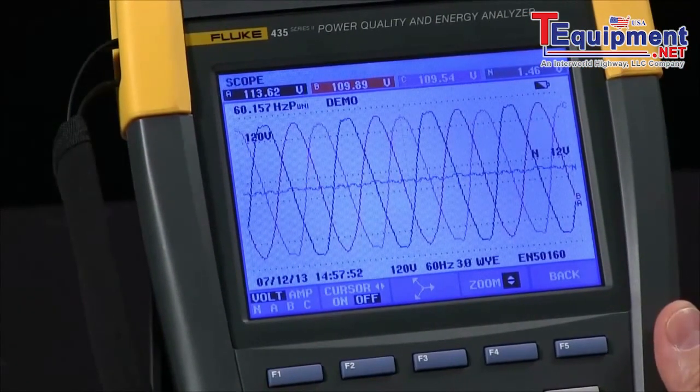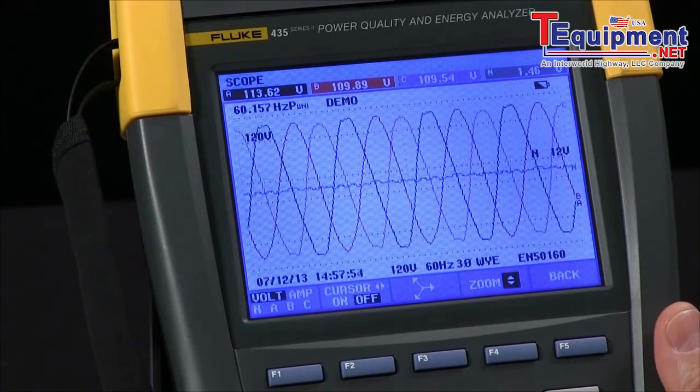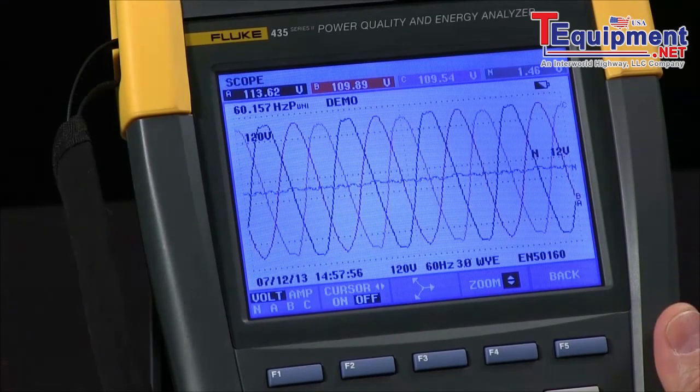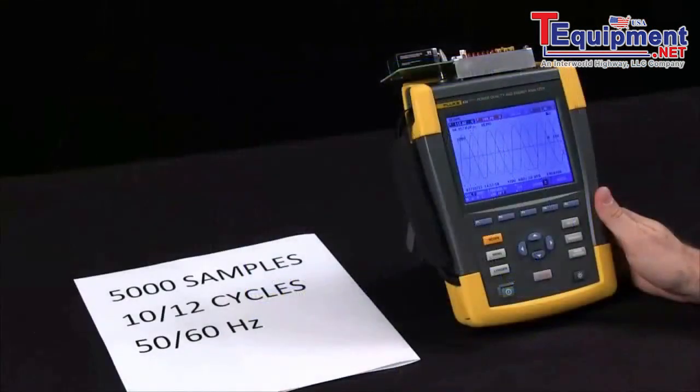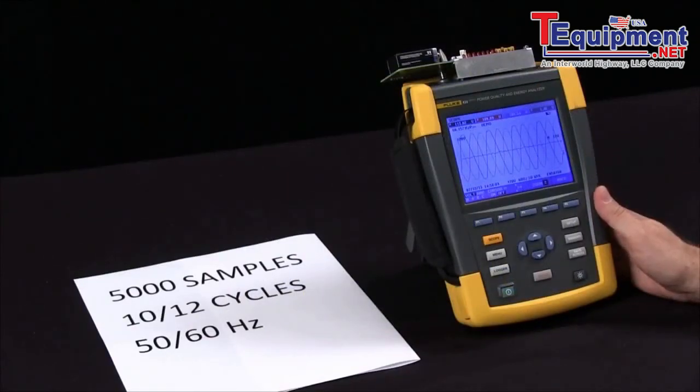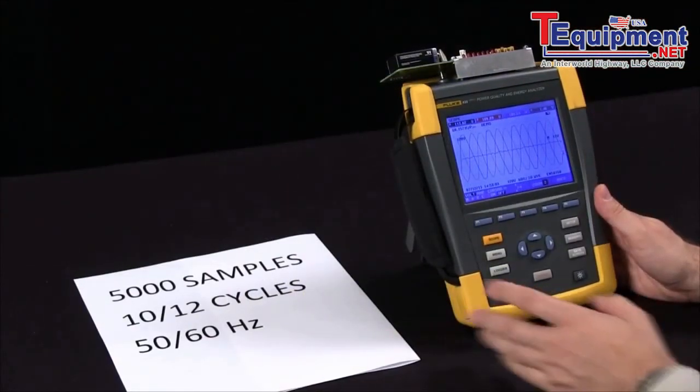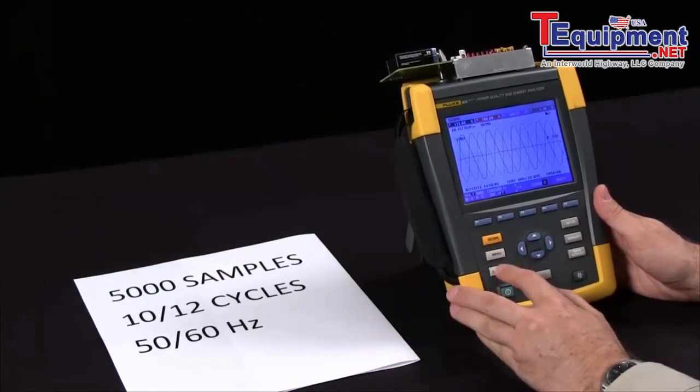Today I'd like to discuss the difference between your logging capture interval and sample rate on a 435 series 2 power quality analyzer. We have our display here from our scope generation board, and I'm going to go into my logger menu.